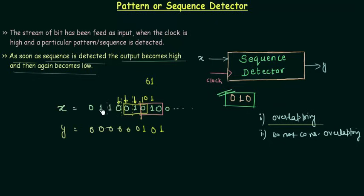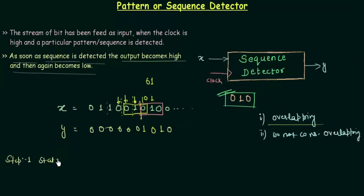In the same way, once a bit is checked it will keep checking the bit stream while the clock is high. So what are the steps required to get this sequential circuit? Step 1 is to obtain the state diagram.